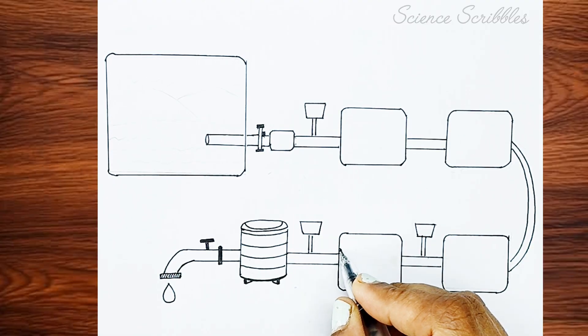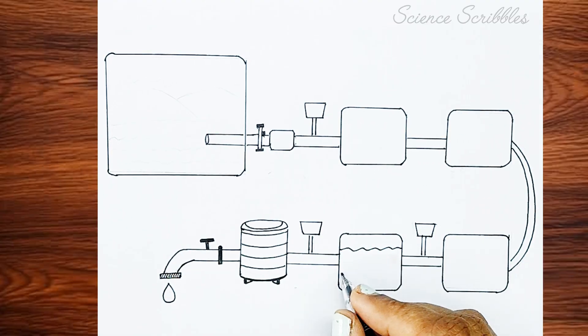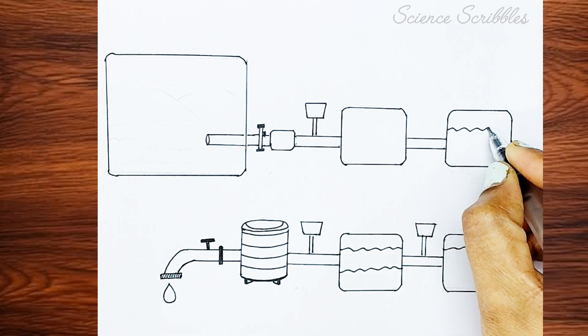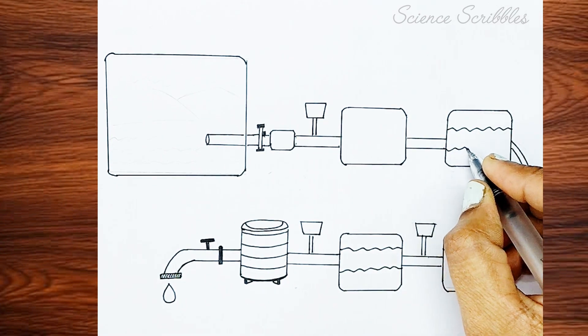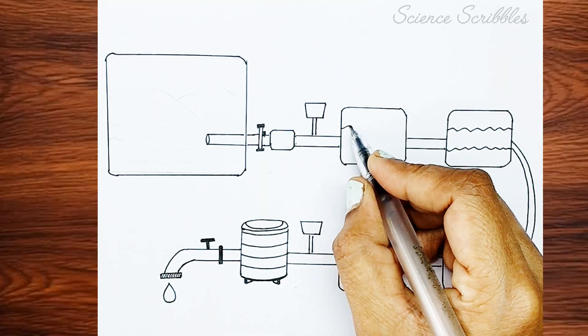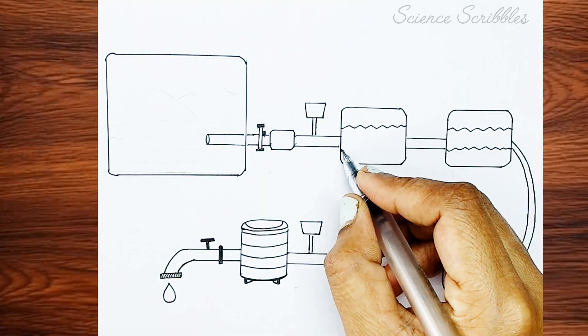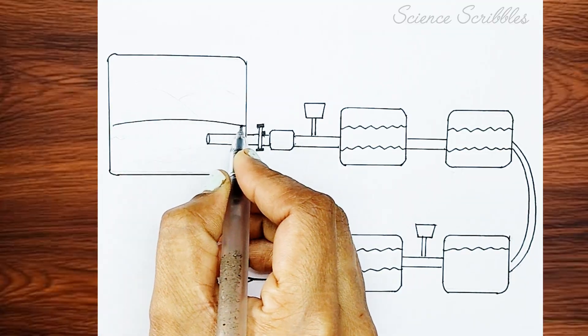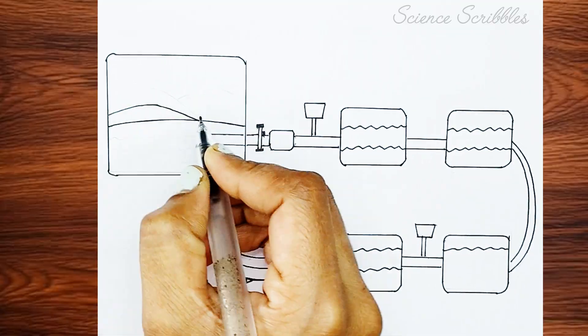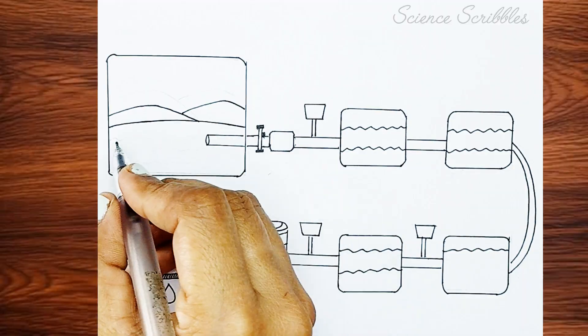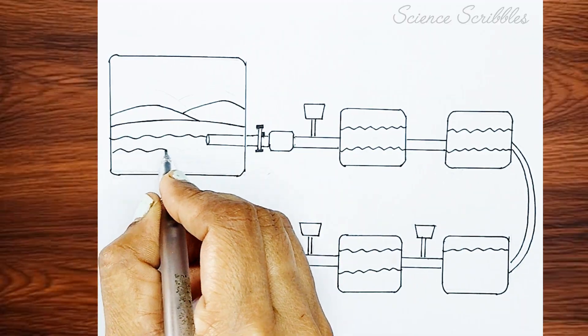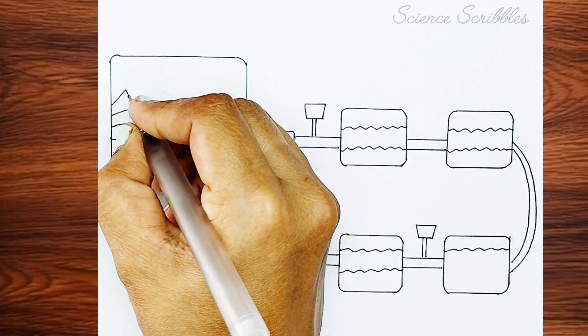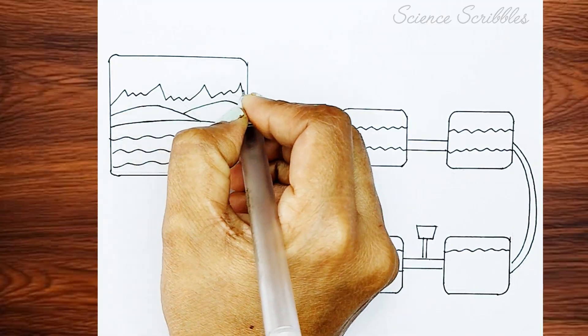Starting from the lower rectangle, draw wavy lines inside all four small rectangles to represent water. Now, moving back to the larger rectangle, this represents the natural water source. To illustrate this, we will add elements such as a large lake or an ample water supply. To enhance the natural scenery, we will draw mountains, greenery, meadows, and the sky.